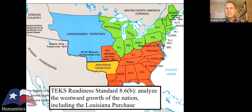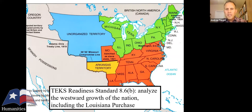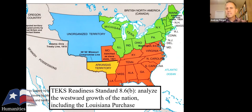TEKS 8.6b asks us to analyze westward growth including the Louisiana Purchase — I'd emphasize discussing that in context with the expansion of slavery under cotton and the Missouri Compromise controversies. The northern portion of the Louisiana Purchase was reserved for free states. Looking at the map, that left very little room for slave South expansion — just the Arkansas Territory — compared to the vast free territory. In some ways, slavery's expansion seemed hemmed in.